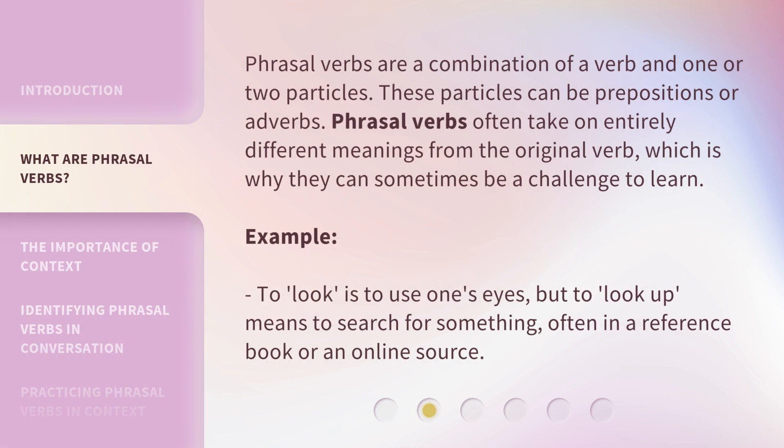Phrasal verbs are a combination of a verb and one or two particles. These particles can be prepositions or adverbs. Phrasal verbs often take on entirely different meanings from the original verb, which is why they can sometimes be a challenge to learn. For example, 'to look' is to use one's eyes, but 'to look up' means to search for something, often in a reference book or an online source.